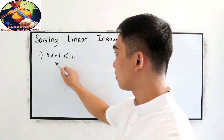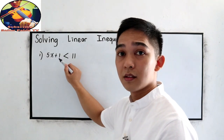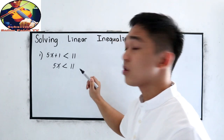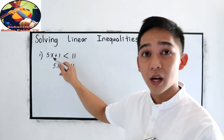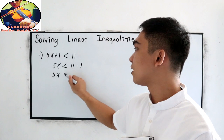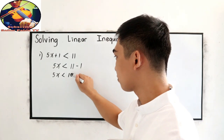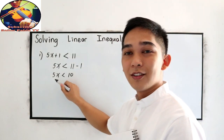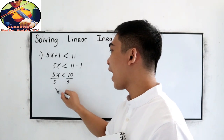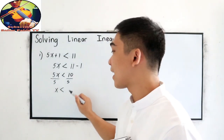To solve for x, let us use the addition property of inequality. Transpose positive 1, so it becomes negative 1 on the right side: 5x is less than 11 minus 1, which is 10. Now divide both sides by 5, so x is less than 10 divided by 5, which is 2.